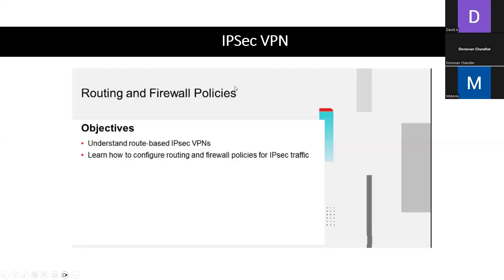All right, guys, let's go ahead and jump on in. So it's been a long break, but we're hopping right back to it. We left off on going over how the configuration is set up for IPsec VPNs. Now we're going to go ahead and talk about how to set up the firewall policies. We're also going to touch on redundant VPNs and monitoring and logs.